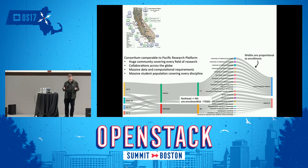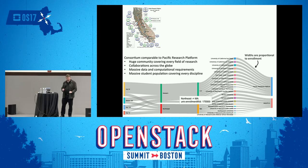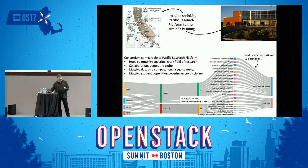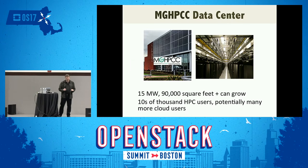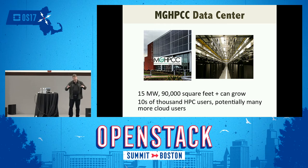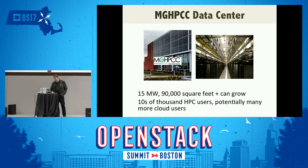The key difference is we've taken that whole thing and compressed it into one building. We built a shared data center — 15 megawatts, 90,000 square feet, about two acres of space — at the MGHPCC. It already has tens of thousands of HPC nodes with tons of space to grow. Having all that infrastructure in one building gives incredible opportunity to build the cloud, which is what we've been doing with the MOC.